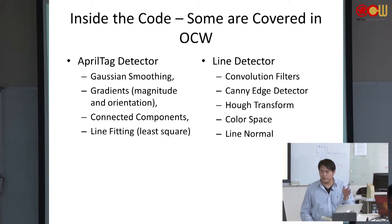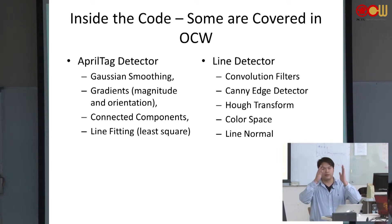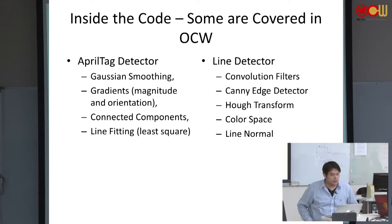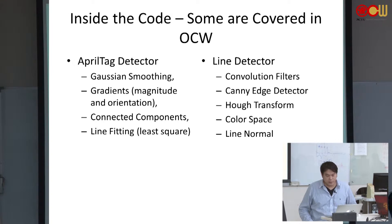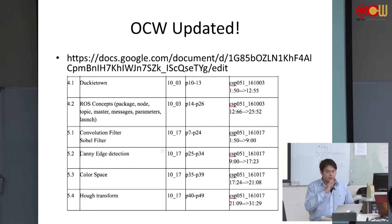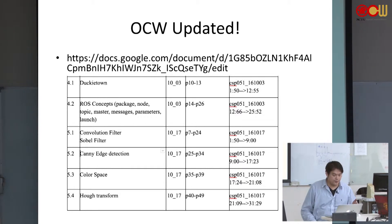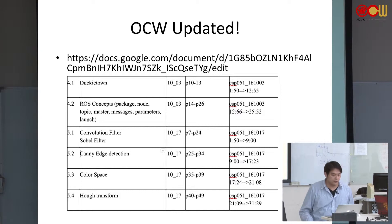You also convert the color space and calculate line normals, because you want to know whether a line segment is on the left or right of the patch. You can find similarities to what we covered last week: Gaussian smoothing, gradients, connected components, line fitting, etc. In the OCW you can see sections covering exactly what happens in this line detector in Duckietown.